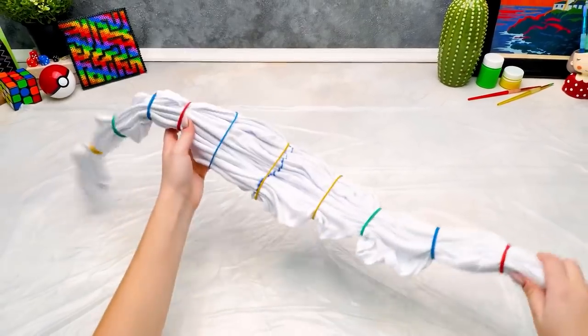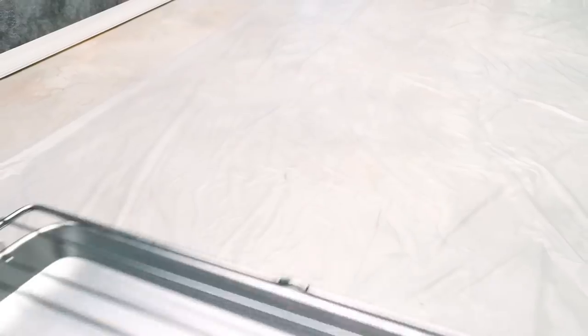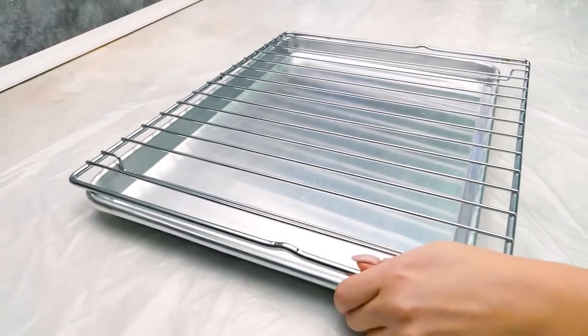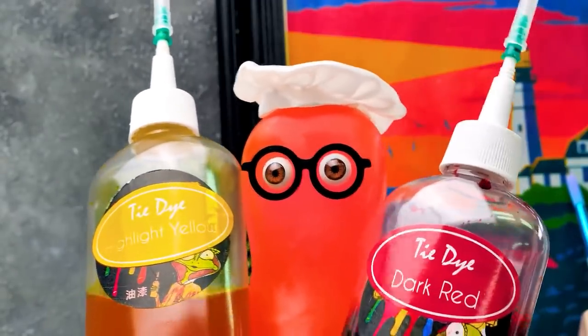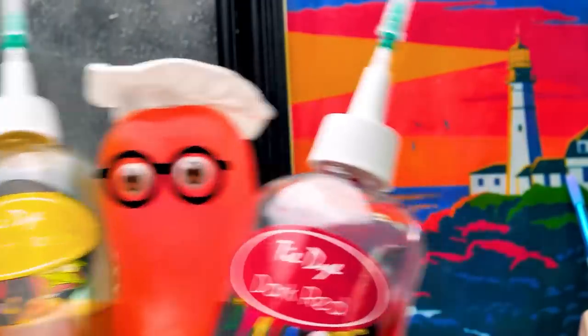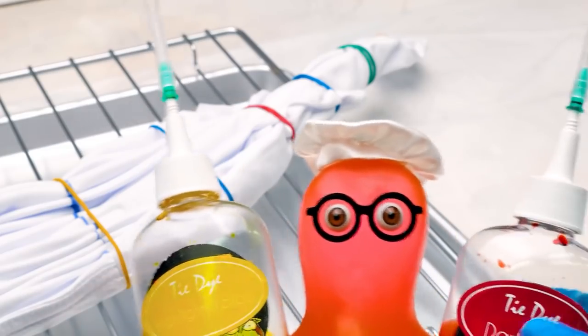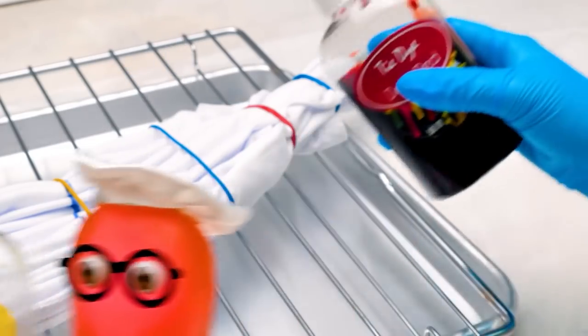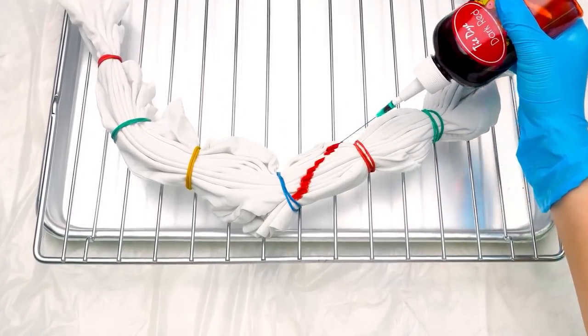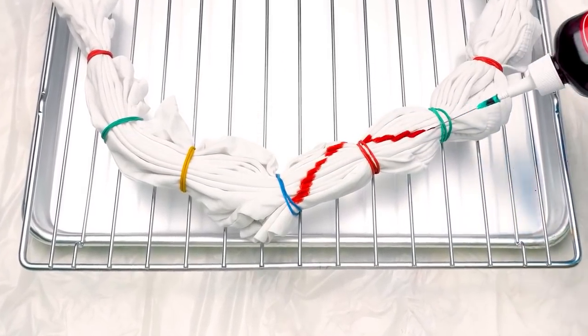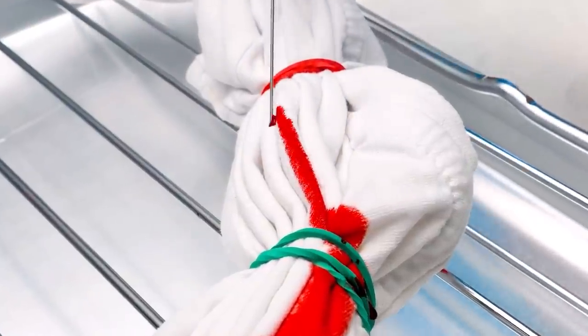Now the t-shirt looks like a long sausage! Let's grill it on this iron grid! And we need some seasonings too! Which one do you prefer? Cheese or chili pepper? I'll go with the red color! Here we go! We'll squeeze the bottle and draw a zigzag. We need to do it like this, from one end to the other.